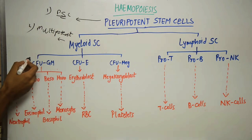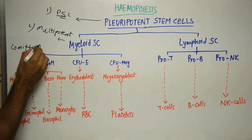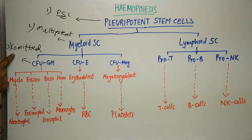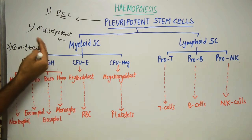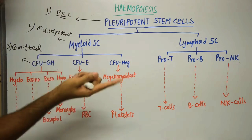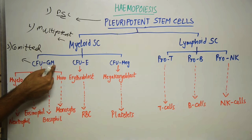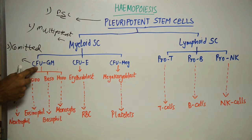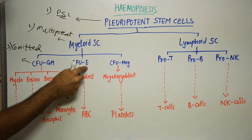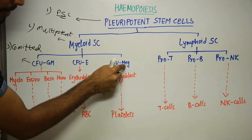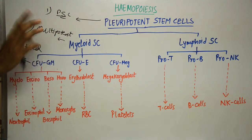Myeloid stem cells give rise to three different types of committed cells — the third series. These three committed cells are: colony forming unit granulocyte-monocyte (CFU-GM), colony forming unit erythrocyte (CFU-E), and colony forming unit megakaryocyte (CFU-Meg). These are the three different types of committed cells derived from the myeloid stem cells.